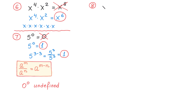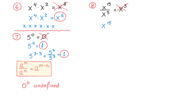In the next example, we divide x to the fifteenth power by x to the fifth power. Dividing the exponents to write x to the third power would be incorrect. Instead, according to the quotient rule, when dividing two expressions with the same base we subtract the exponents, giving x to the tenth power.